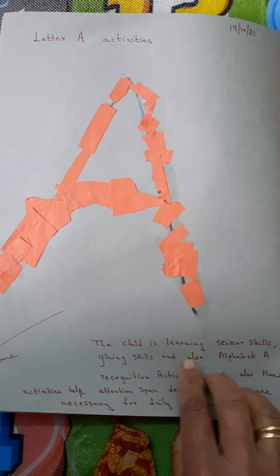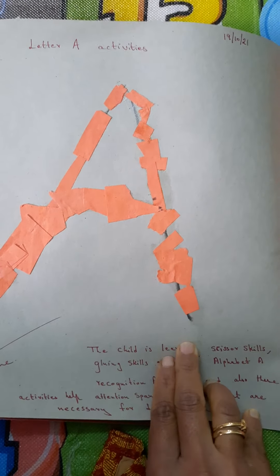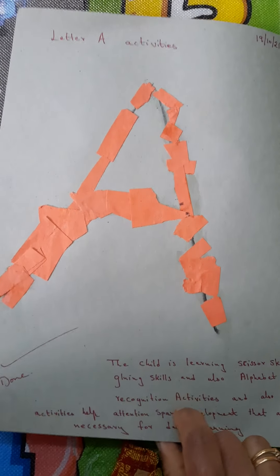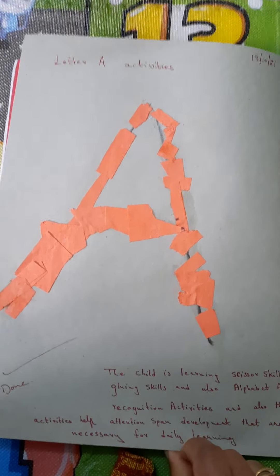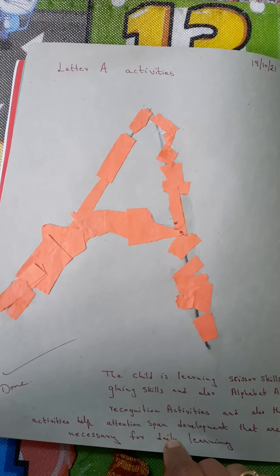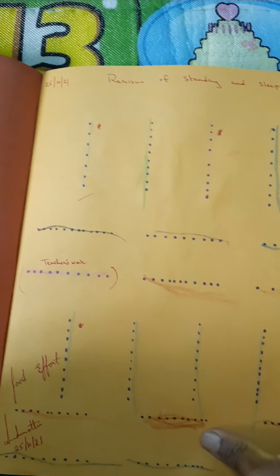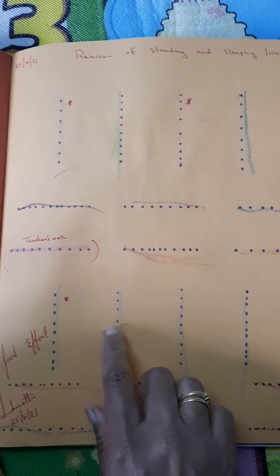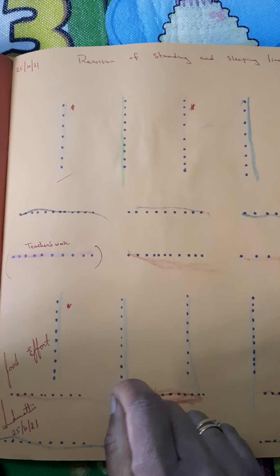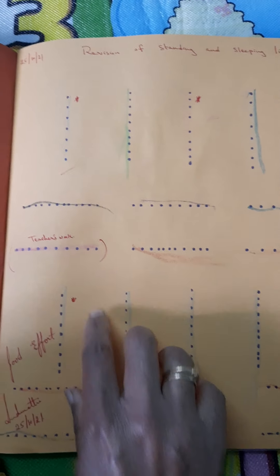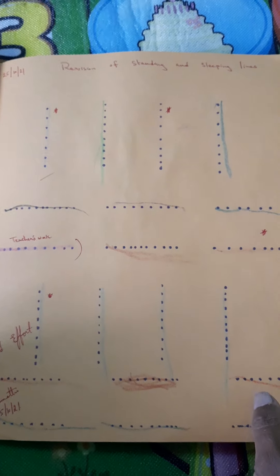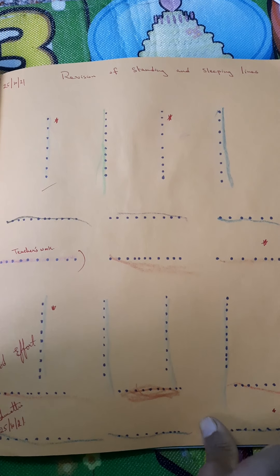Then letter activities begin. Through these activities the child learns to master scissor skills, gluing skills, and to recognize the alphabet. There is also the sleeping line. Once the child has mastered pencil-holding activities, the child is given practice writing the standing line and sleeping line.